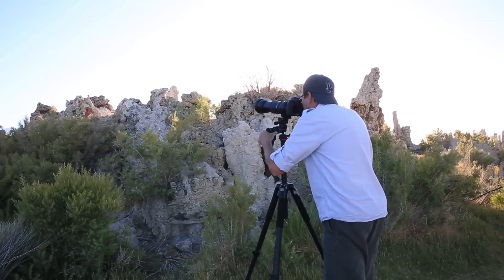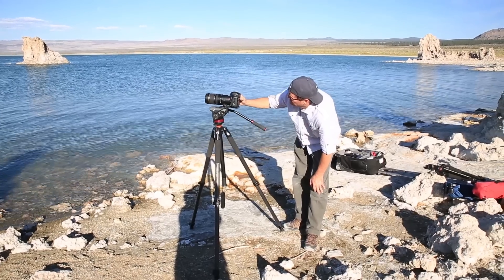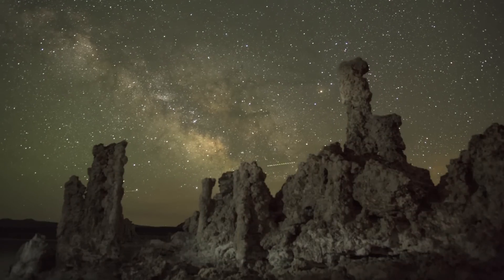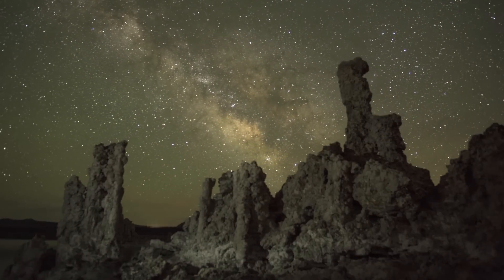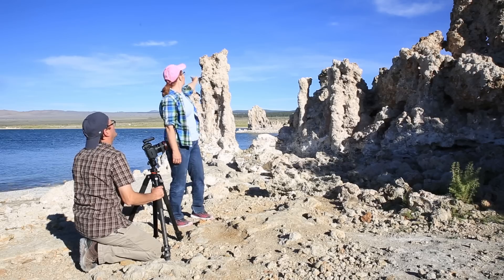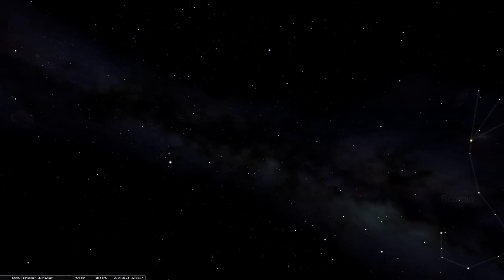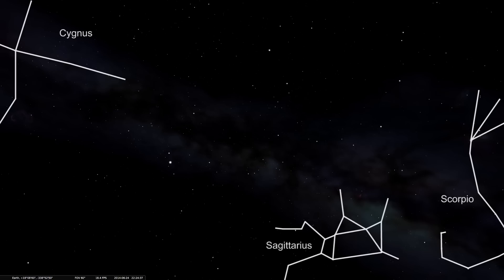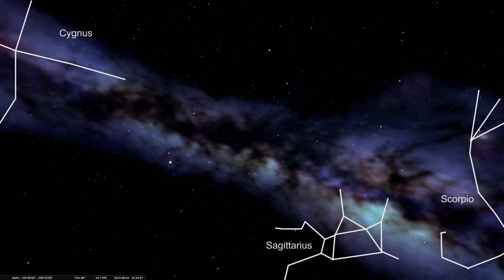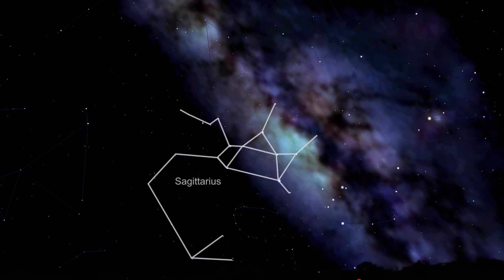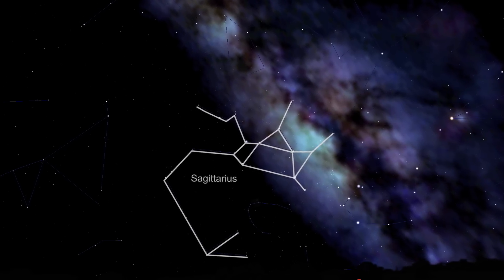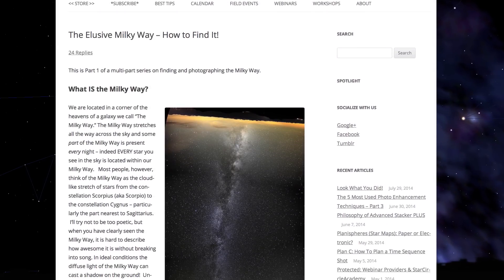First off, we have to know where the Milky Way is going to be and what time it's going to come up on the horizon. When people say we're going to photograph the Milky Way, all the stars you see in the sky are in the Milky Way. What most people think of as the Milky Way is that cloudy area that comes together. I did a little research and found out that it's basically the constellation of Scorpio down to Cygnus, and really around Sagittarius. I'm looking for that cloudy area that comes up on the horizon, and to find that I've got to find the constellation Sagittarius — that cloudy area is in that constellation.